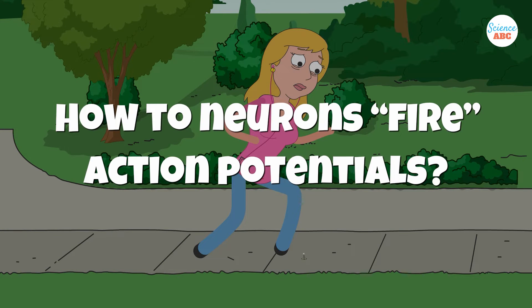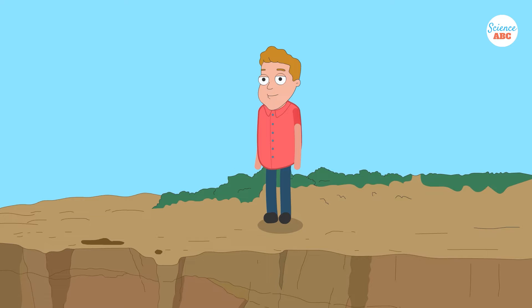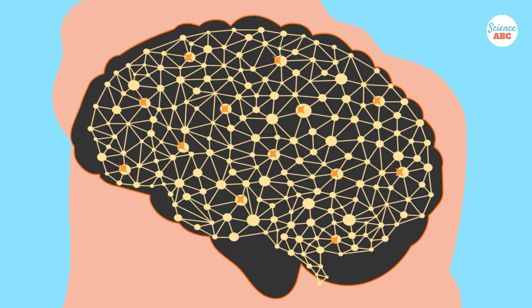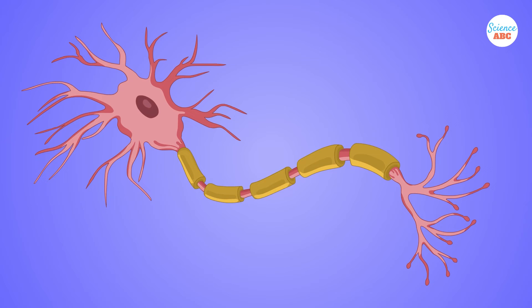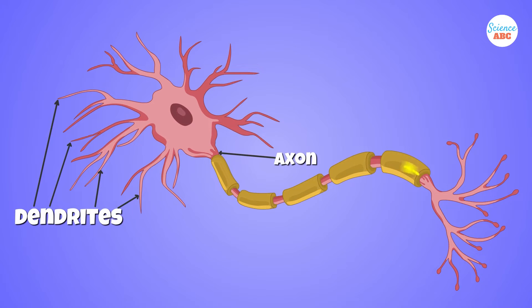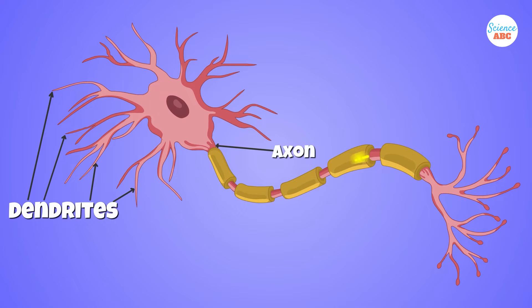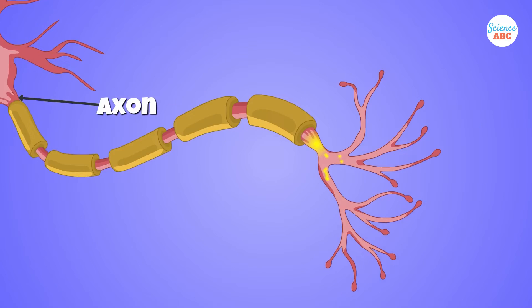So how do neurons send these signals or fire these action potentials? The human brain contains tens of billions of neurons that are connected to each other. Each neuron has a cell body with several branches. The smaller branches, called dendrites, receive signals that come together, and then the total signal is transmitted through the longest branch, the axon. Similar to how a wire carries electricity from a switch to an electric bulb, the axon carries nerve impulses from a cell body to the next cell.